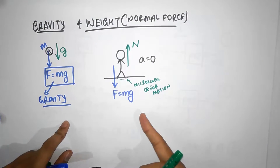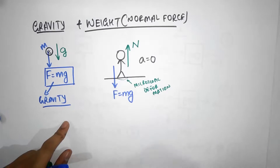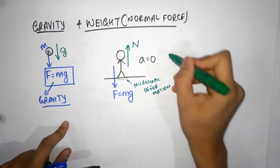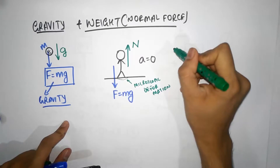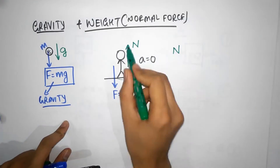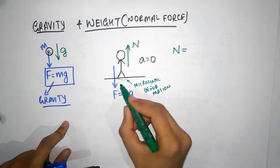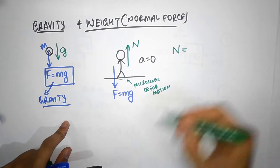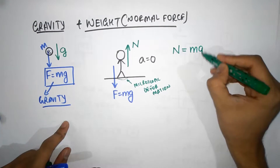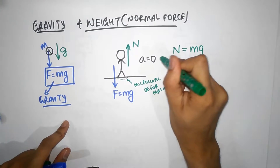In this example, the normal force is equal to mg, and we know that because you are not accelerating. N, which is the normal force — it's called normal because it's perpendicular to the ground — is a contact force, and it's equal to mg in this case because acceleration is zero.